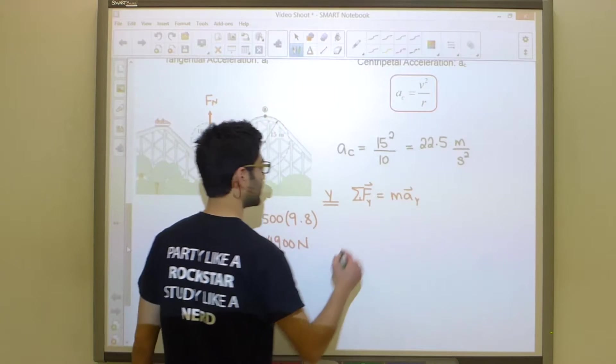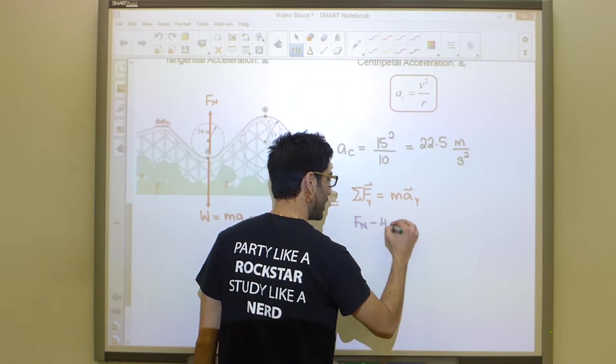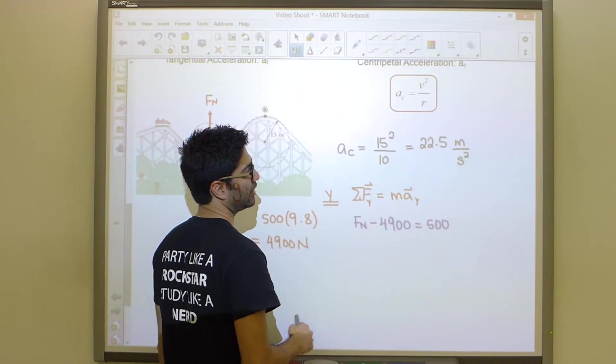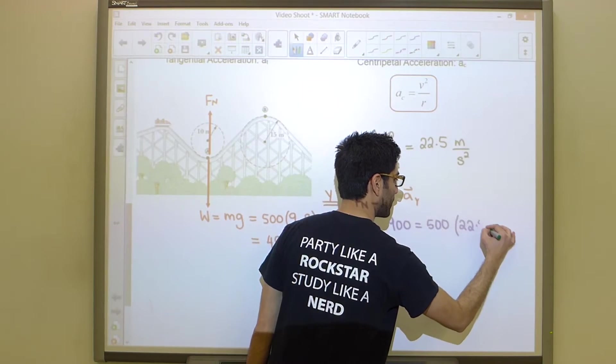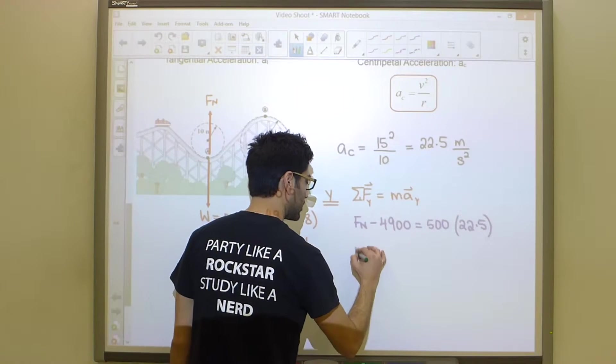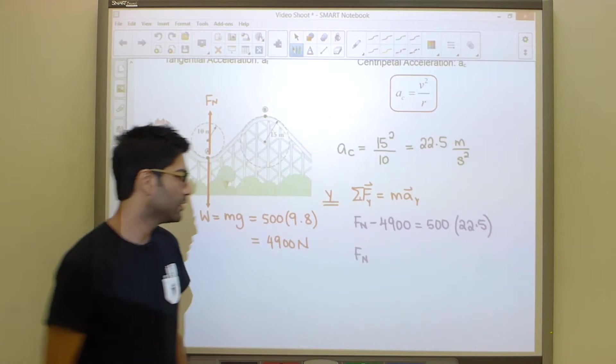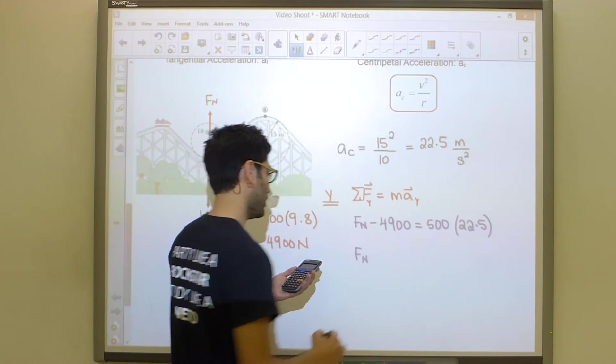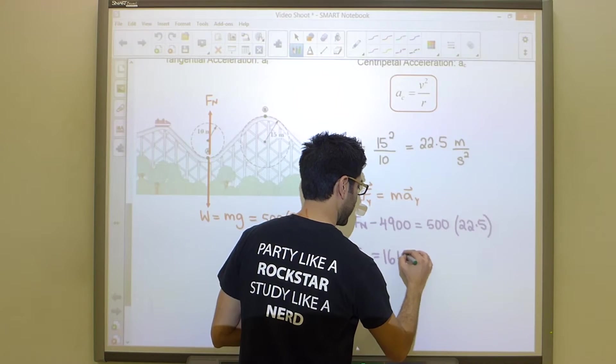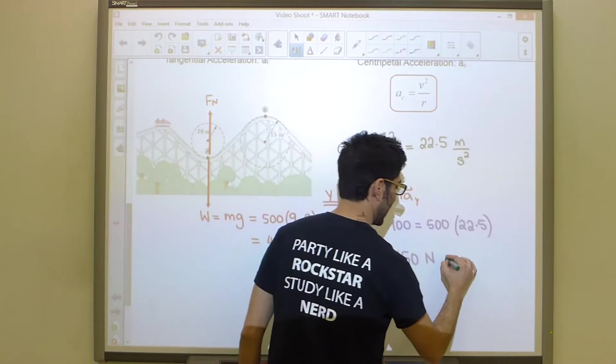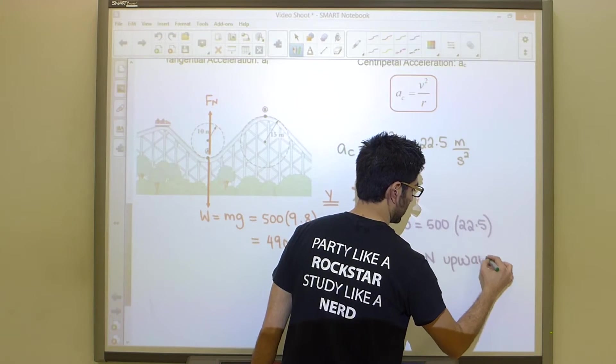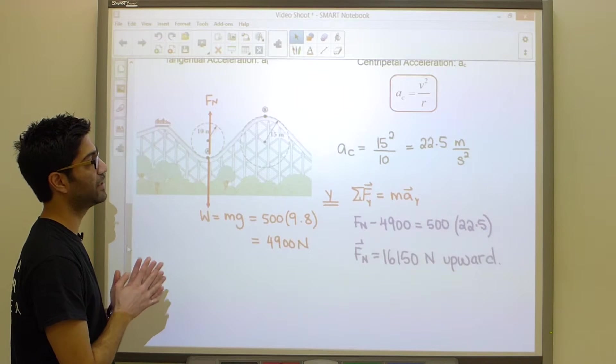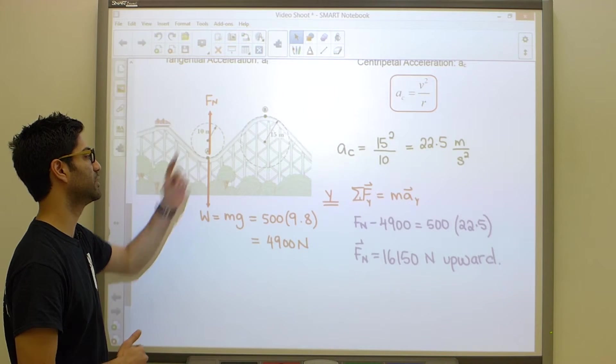That lets us know we should choose our positive direction to be upward in the direction the body is accelerating. This guy is a positive value, and anything that does not point towards the center would be negative. Setting this up: FN positive minus 4900 equals our mass, 500, times our acceleration. FN is 16,150 newtons upward. That answers the first part. Realize there is an acceleration due to a change in direction, pointing upwards towards the center of the circle.